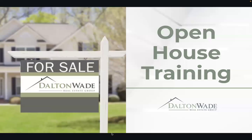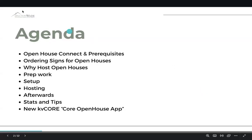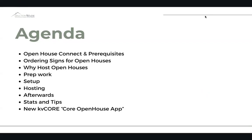Open house training is pretty quick — just a quick overview of how you want to run your open house from start to end. Today we're going to talk about what Open House Connect is, which is part of our lead program. We'll talk about ordering your signage and business cards, why hosting an open house, some prep work, the setup, the hosting, what you do afterwards to follow up on leads, some statistics and tips, and the new KV Core Open House app, which connects right into your KV Core account.